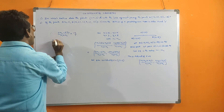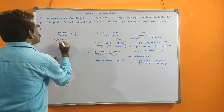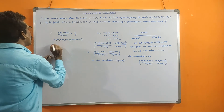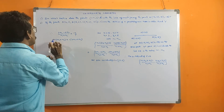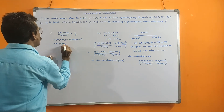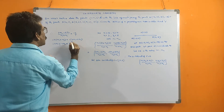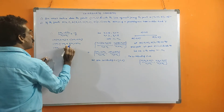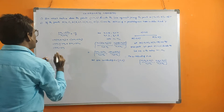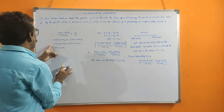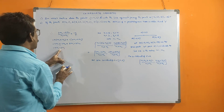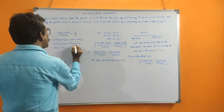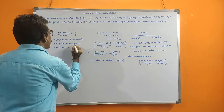Cross multiplication: -4 into M1 plus M2 is equal to 1 into 3M1 minus 6M2. Expanding: -4M1 minus 4M2 equals 3M1 minus 6M2. Taking M1 terms on one side and M2 terms on the other: -4M1 minus 3M1 equals -6M2 plus 4M2, giving -7M1 equals -2M2.